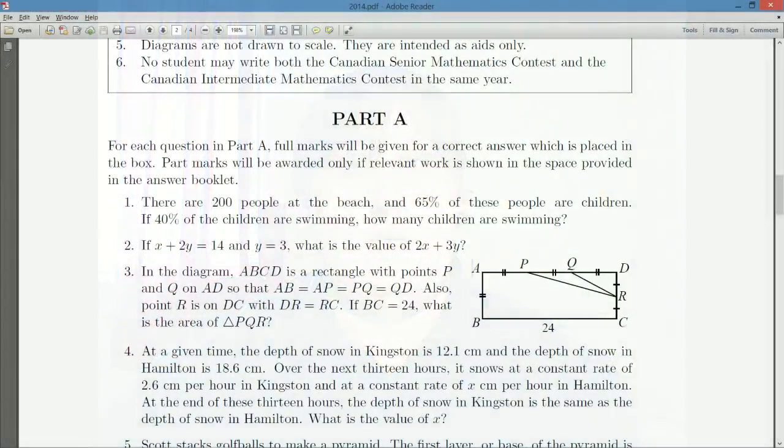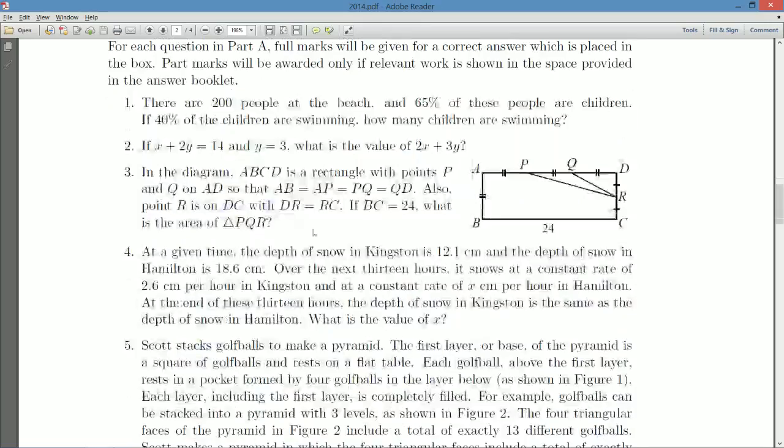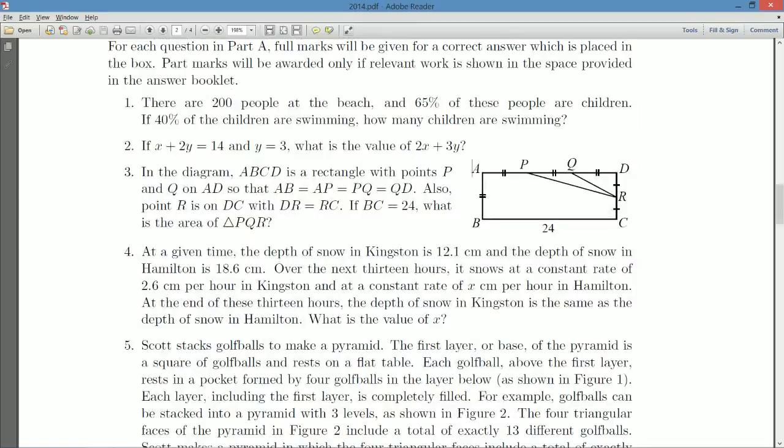For question number three, in the diagram ABCD is a rectangle with points P and Q on AD, such that AB, AP, PQ, and QD all have the same length. Okay, they're all equal.